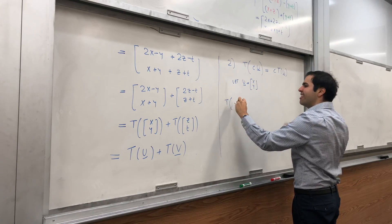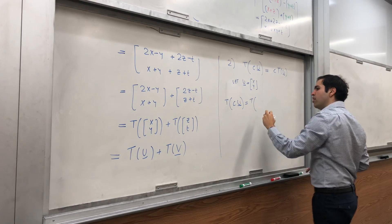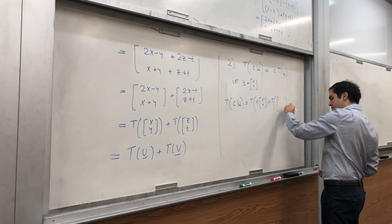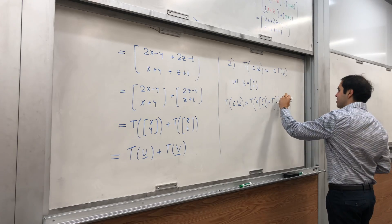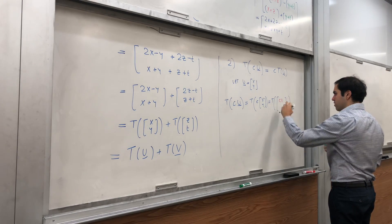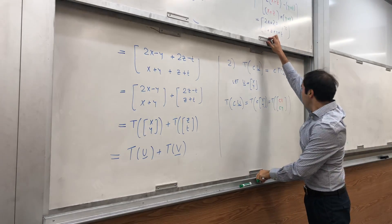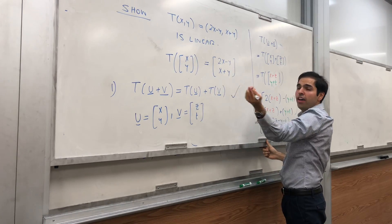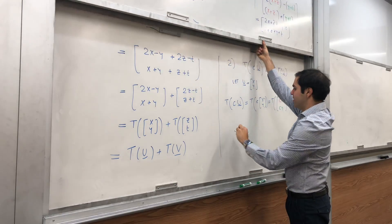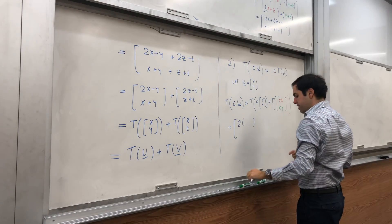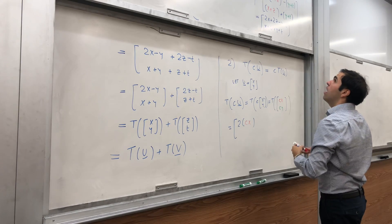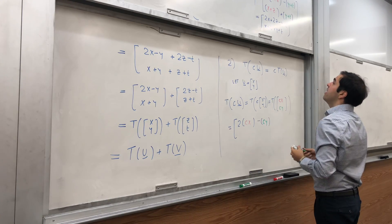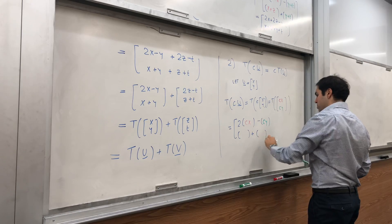Then let's see. Literally, let's see. T(cu), that's T(c times (x, y)). Well, that's T of, and again let me use colors, (cx, cy). And now, what we would like to do, we would like to use the definition of T, but instead of x and y we put cx and cy. So this becomes 2(cx) minus cy. And then, well, just the sum. So cx + cy.